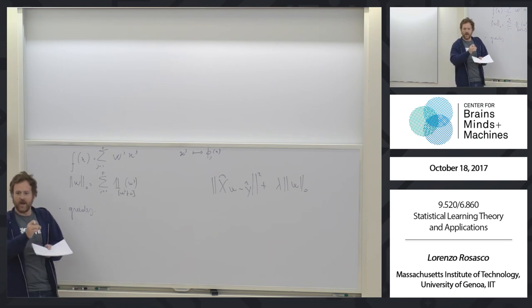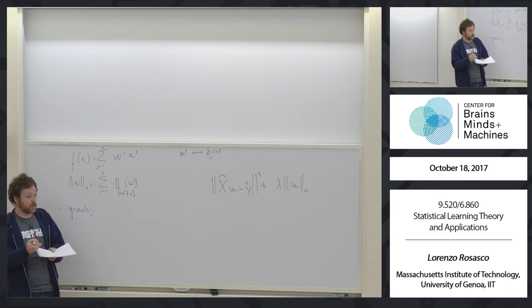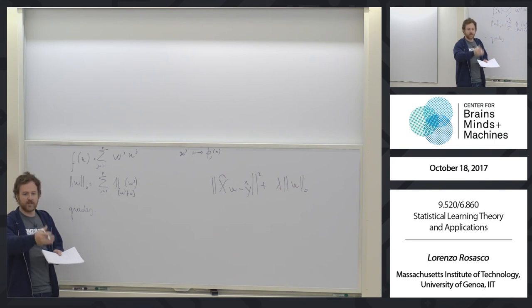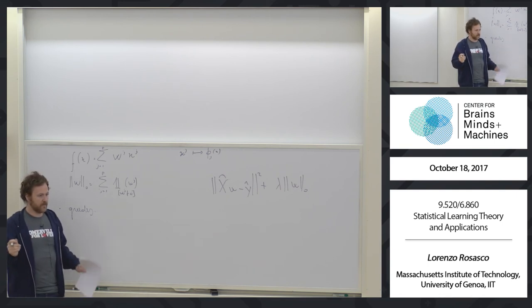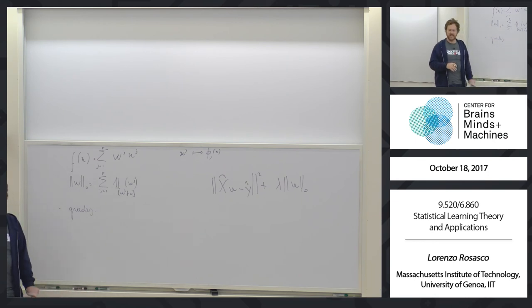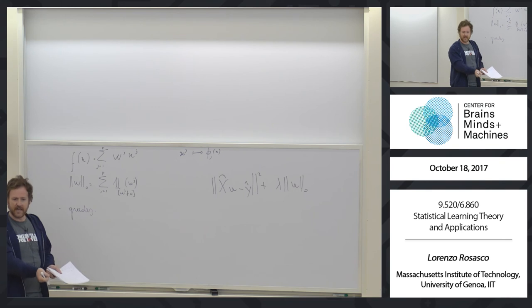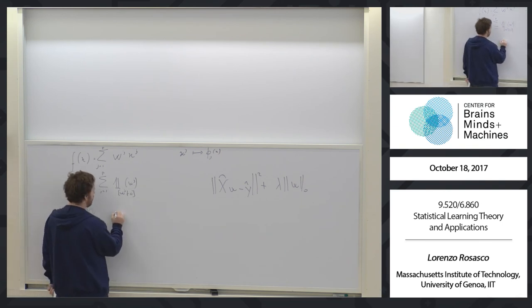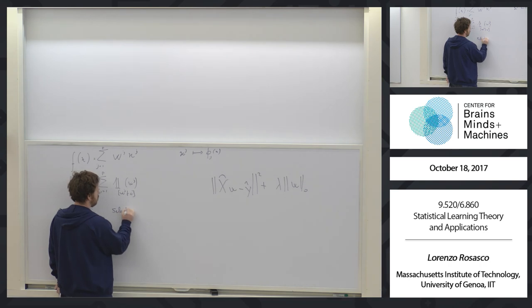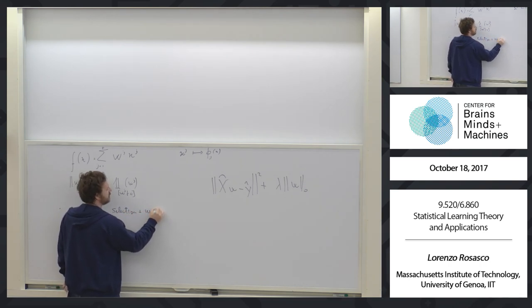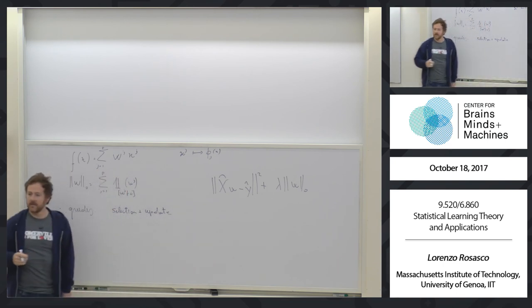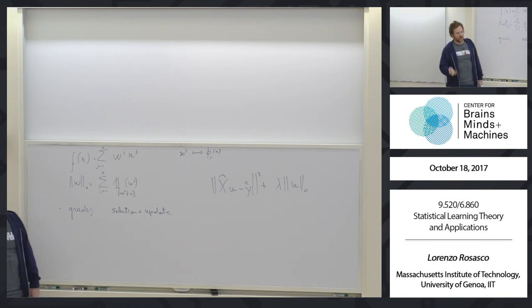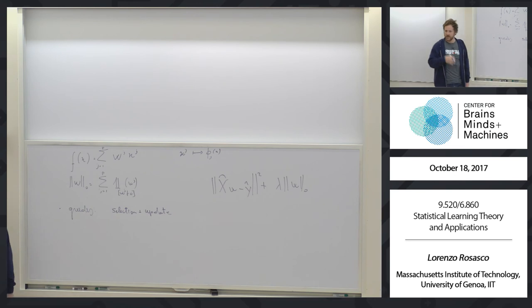Every time you go and add one variable, you look from size one to size two groups — it doesn't explode because you're always fixing the first elements. If you look at size M, you fix the first M minus one elements of the group, so it's always linear. There are a couple of flavors: one where you just compute the coefficients every time you select without updating them, and another where every time you select something you recompute the coefficients. Both have a selection plus update step. Names here are greedy methods, stage-wise, forward stage-wise regression, matching pursuit, and variants.